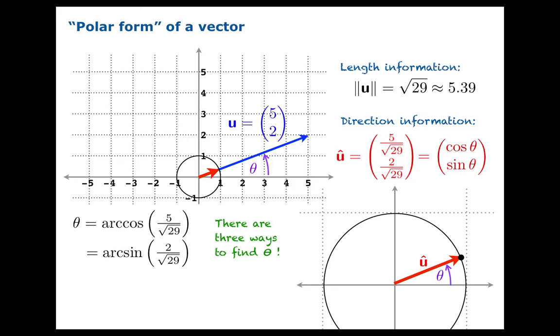Or it could be the arc sine of 2 over root 29. Or, going back to the picture above, it could be the arc tangent of 2 over 5, being the rise over run. It's the slope. It's tangent of that angle theta. So we've got three different ways to calculate it. And in any case, you get 0.38 radians or about 21.8 degrees.